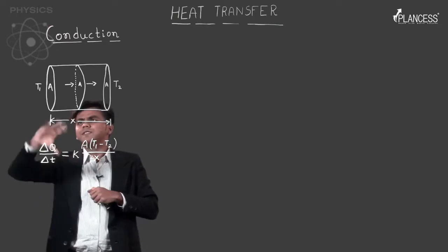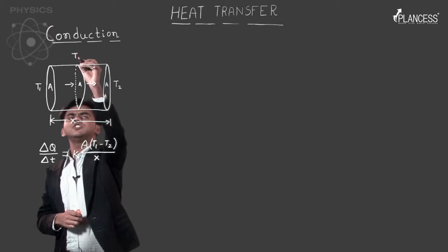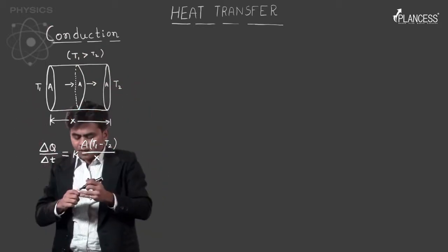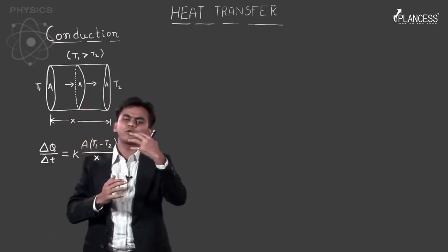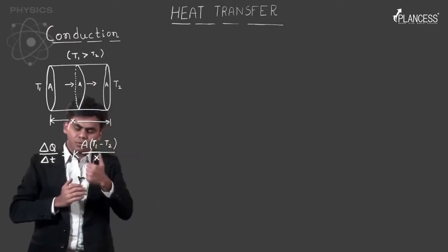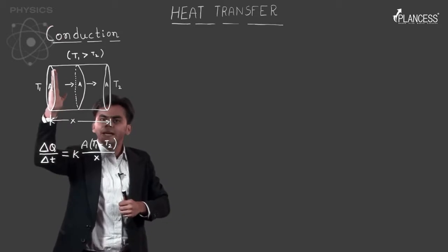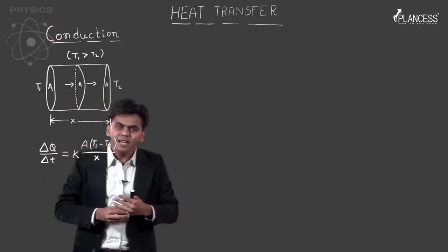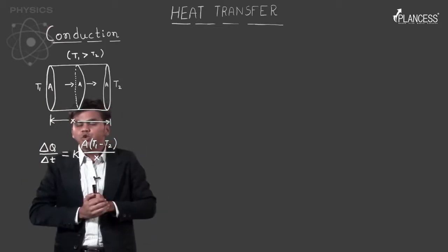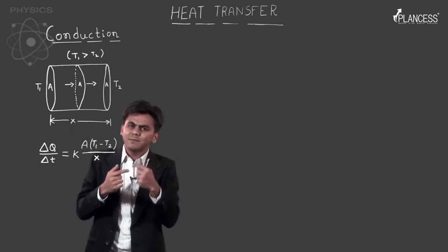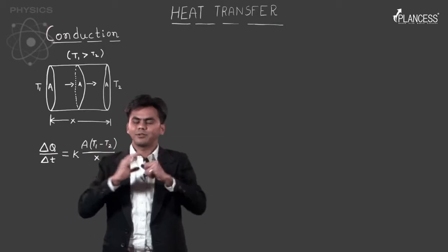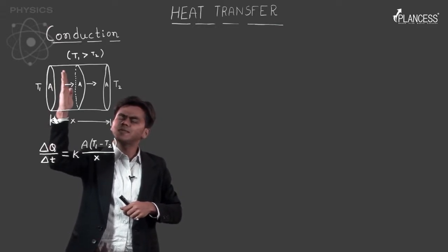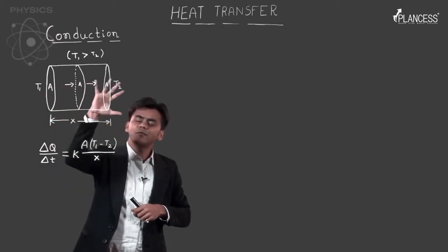Naturally, if this is my stove, T1 would be greater than T2, and both ends are maintained at these temperatures. Since I've taken a cylindrical object, the area of cross-section is the same throughout. Initially, this end has a high temperature and this end has a low temperature, so heat would flow from the hot end to the cold end. Since we're studying conduction, heated molecules here transfer energy to the next section, and so heat flow takes place.